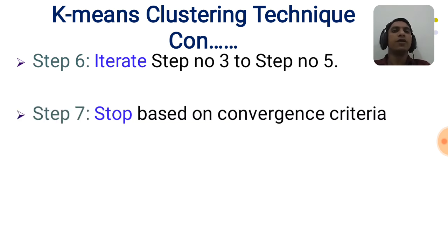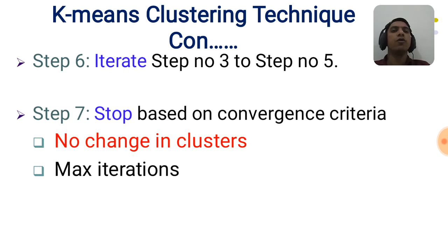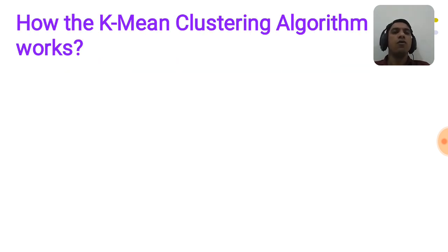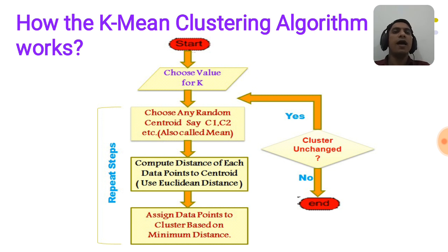Step number seven: stop based on convergence criteria. We have two convergence criteria: one is no change in cluster found, or once we reach the maximum number of iterations. The overall working of the k-means algorithm is shown in this flowchart.